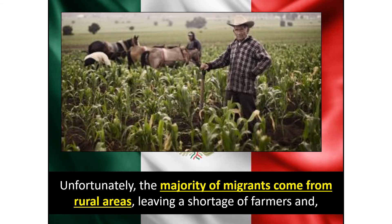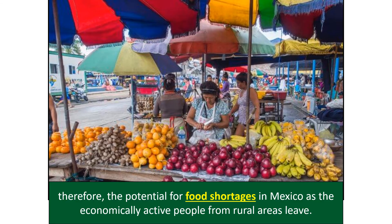Migrants work at incredibly low wages, and Americans desperate for work are now often expected to work at those low wages too, leading to increased poverty. Many companies are also replacing American labor with cheaper migrant labor, increasing unemployment. The majority of migrants come from rural areas, leaving a shortage of farmers and the potential for food shortages in Mexico as economically active rural people leave.